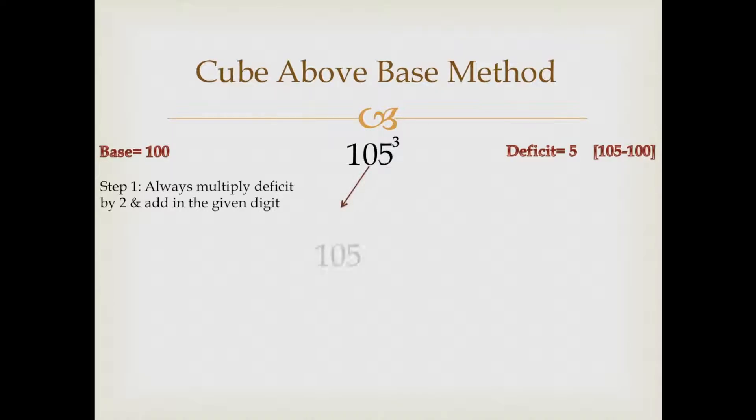Let's write the given digit as it is first of all. Now we'll add five multiplied by two as per step number one. 105 is the given digit and we have added deficit multiplied by two in it.